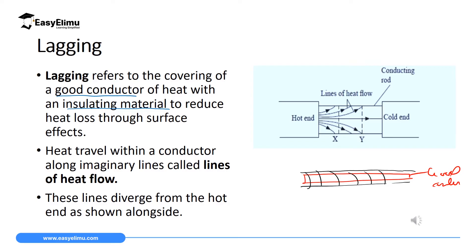This outer layer is a poor conductor of heat, such that when heat is traveling inside the good conductor, it will be insulated from escaping to the environment. So the heat will be maintained within the good conductor.